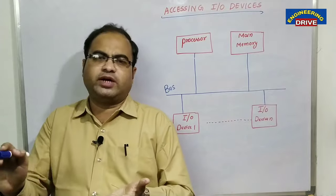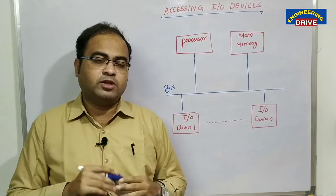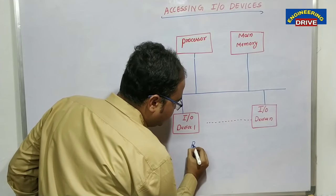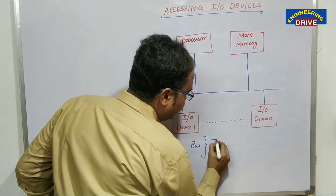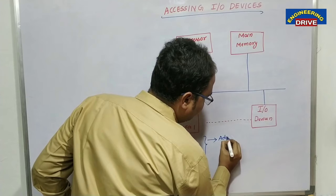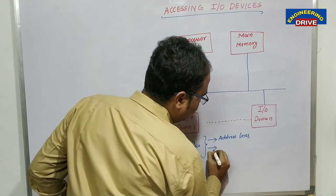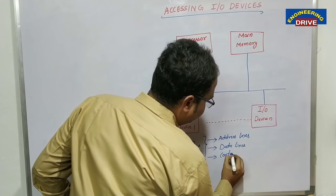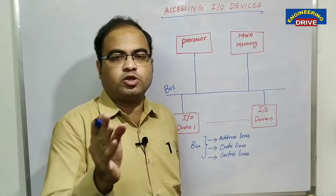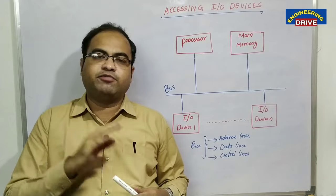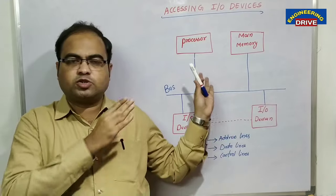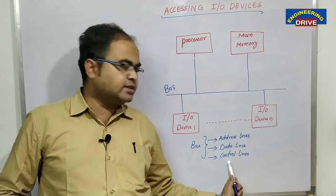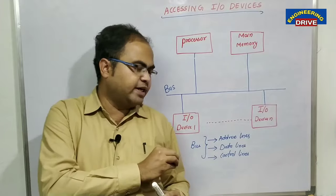A bus is a simple set of wires. In a bus, there are three types of connections available that help establish this communication. Our entire bus constitutes three things: address lines, data lines, and control lines. Every bus is a combination of these three lines, which are responsible for the transfer of information in binary from input output devices to the processor and main memory.